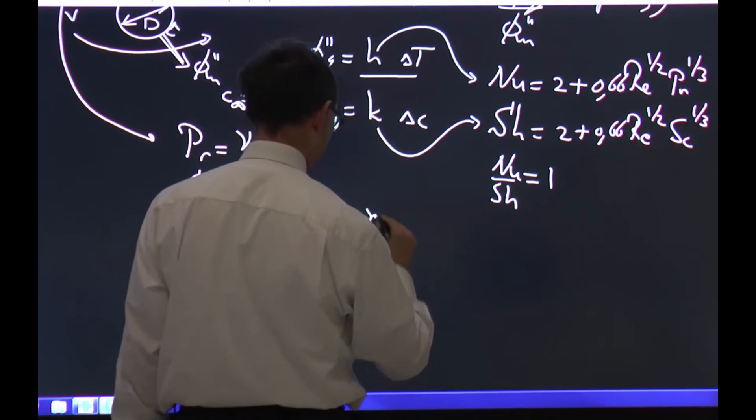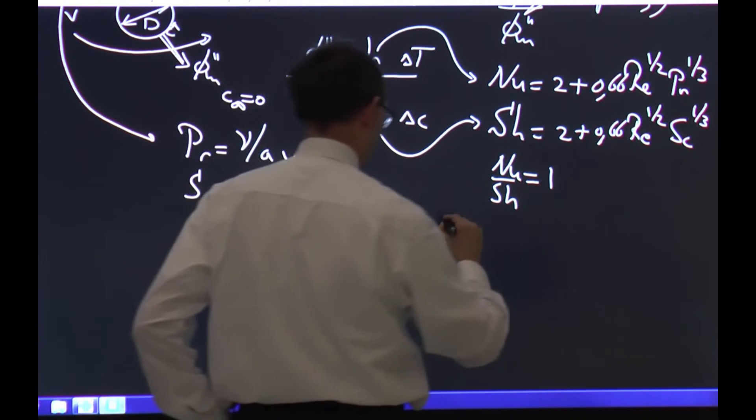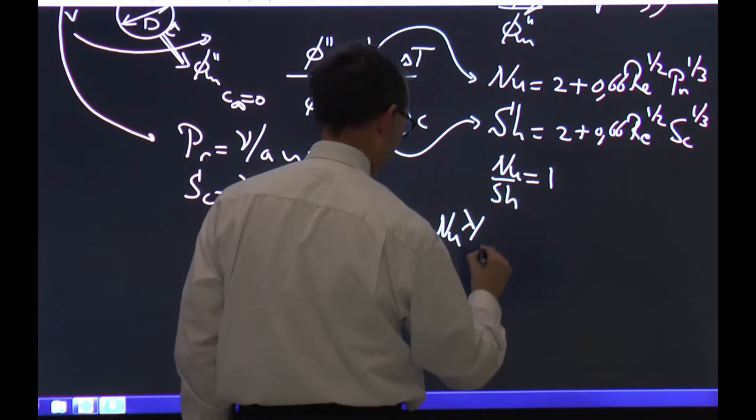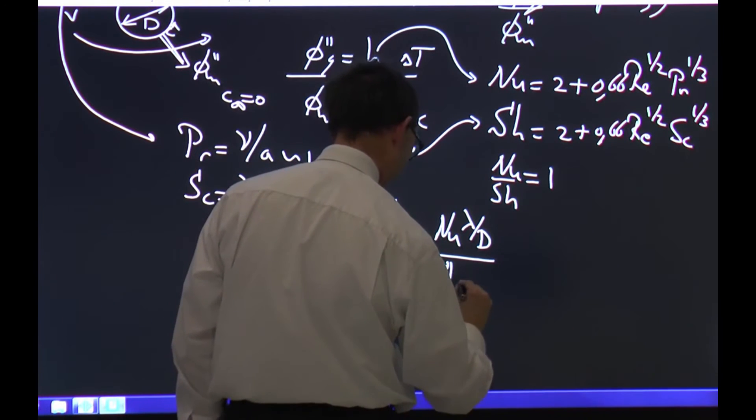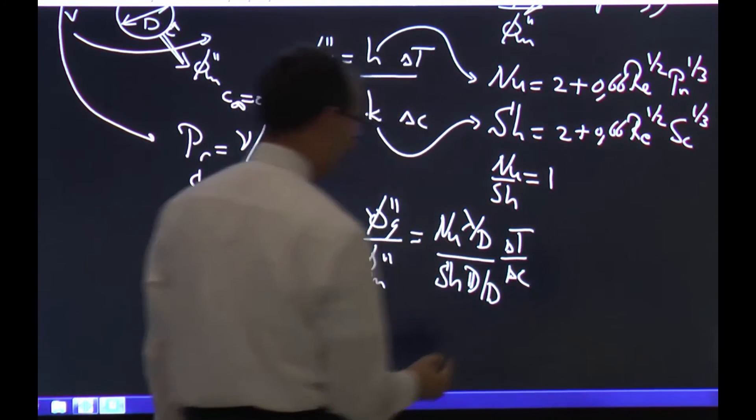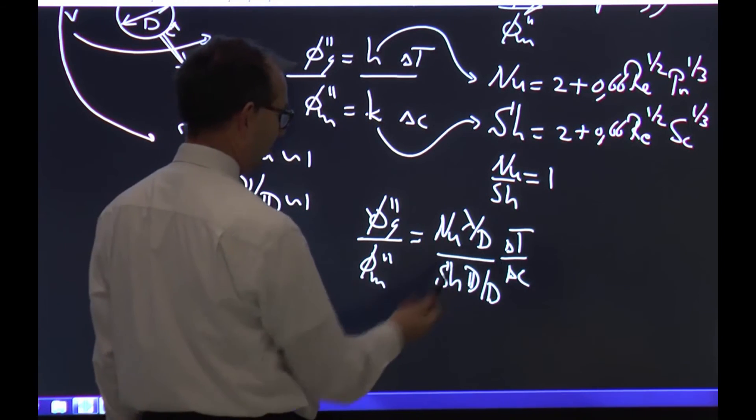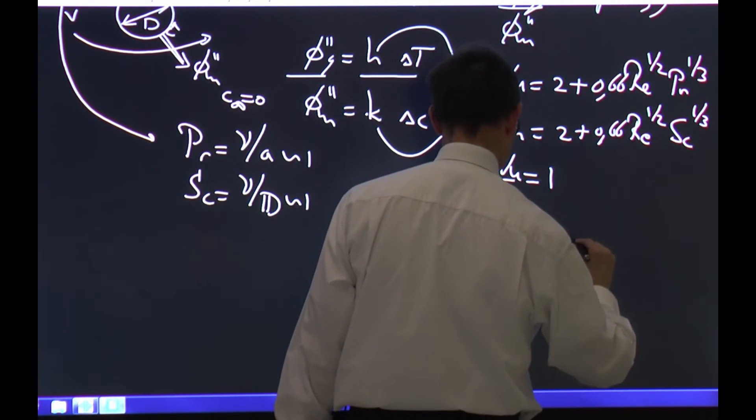Thus I can now write that the heat flux over the mass flux equals H, which is Nusselt lambda over diameter, divided by K, which is Sherwood D over diameter, multiplied by the driving forces delta T over delta C. And what you see is that the diameter drops out. Nusselt and Sherwood drop out because the ratio was one, and all I'm left with is lambda over D times delta T over delta C.